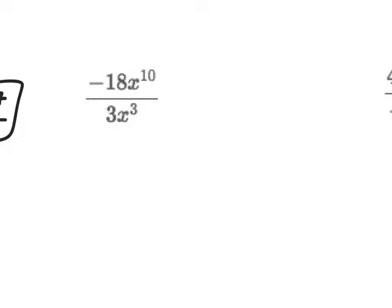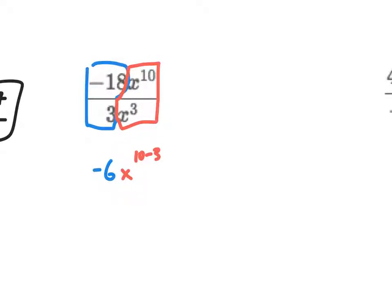On this one, I can divide out my numbers. I've got negative 18 over 3, and then x to the tenth over x cubed. Negative 18 over 3 simplifies down to negative 6. And then I've got x to the 10 minus 3 power, so in the end that gives me negative 6 times x to the seventh power.